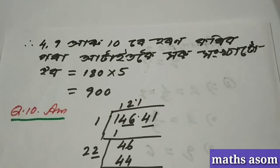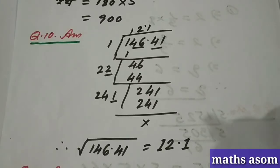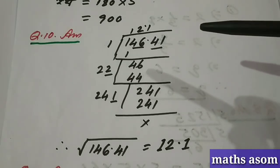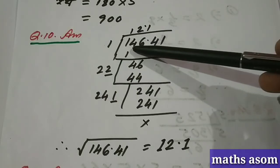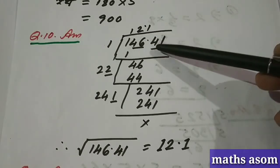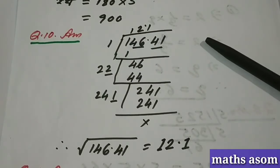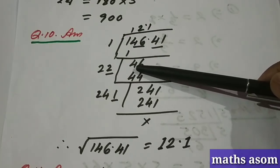Finding the square root: first we perform the operation step by step. First, calculate 146.41. So step by step, we perform the square root calculation — no more — so two.